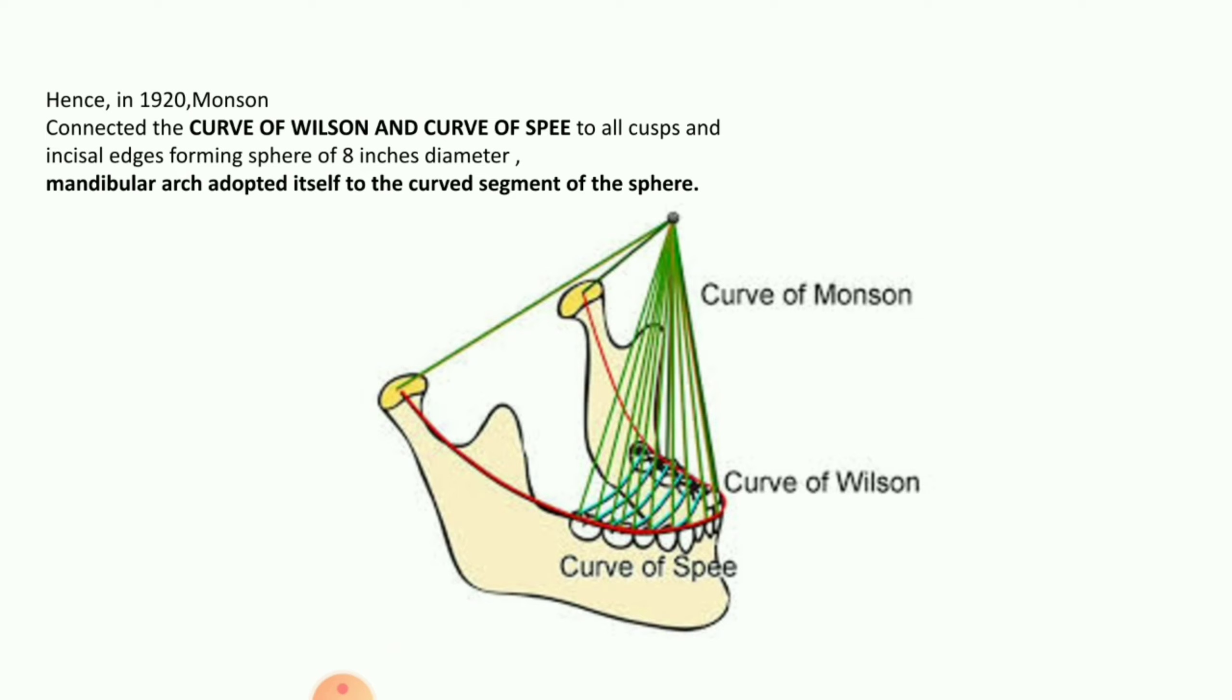In 1920, Monson connected the curve of Wilson and curve of Spee to all cusps and incisal edges, which formed a sphere of eight inches diameter. He also stated that the mandibular arch adapted itself to the curved segment of the sphere. In the figure we can see that curve of Monson connects both the curve of Spee as well as the curve of Wilson.